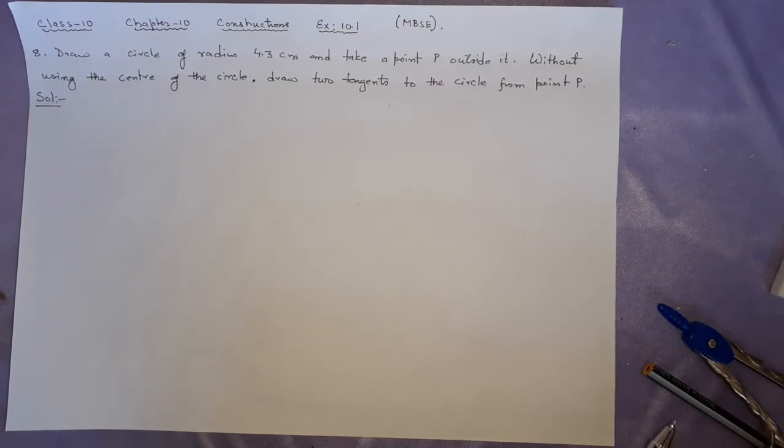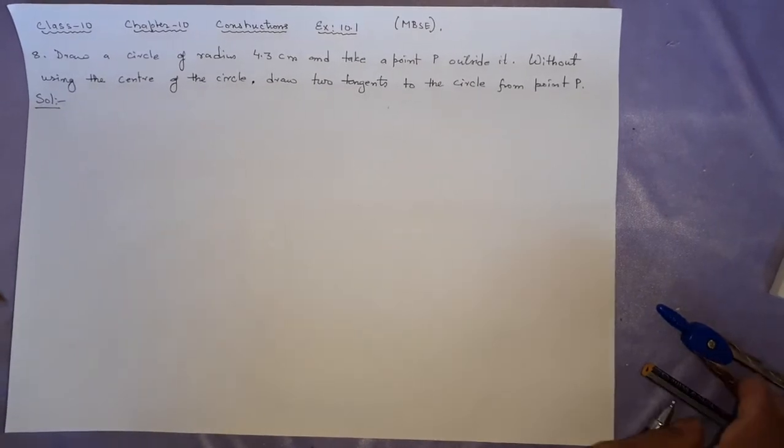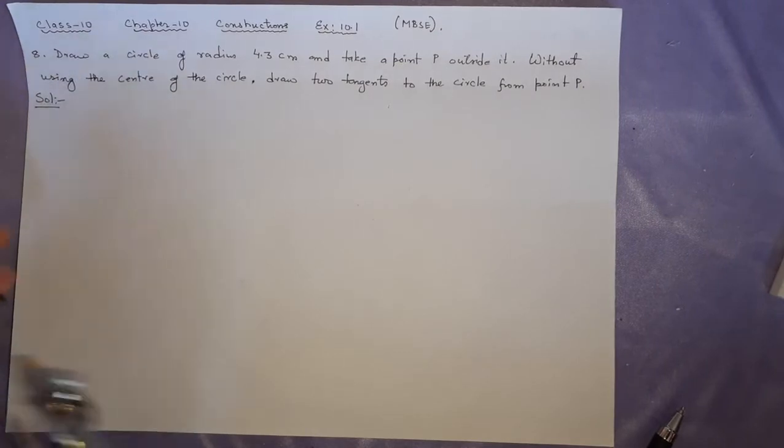This time we are drawing a circle and from the circle we are making two tangents, but the restriction is that you are not going to use the center of the circle. We have done this in our construction 10.5. This time only the radius is given, otherwise most of the things are similar.